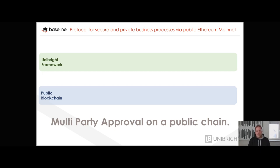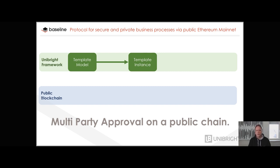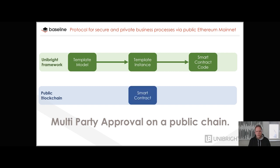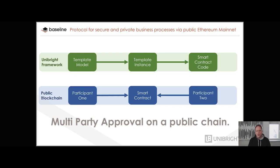Let's have a look at how the multi-party approval works on a public chain. You use the Unibright framework, choose a template model — in this case a multi-party approval template — and then create your very specific instance with exactly the workflow steps you need for your specific approval process, for example between you and your supplier. You then generate code, which is a smart contract that can be published to a public blockchain, representing the state flow of the approval process and holding the current state of approval.